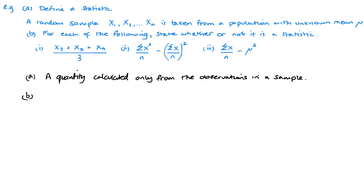Part b asks: for each of the following, state whether or not it is a statistic. The first one is essentially a mean — (x₃ + x₅ + x₉) / 3 — and since those x values are from a random sample, this is going to be a statistic. The second one looks like the variance, and since the variance is taken from the sample observations, it will also be a statistic.